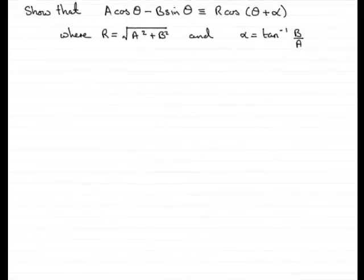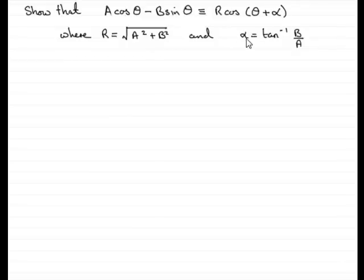Welcome to this tutorial on proving the identity that a·cosθ − b·sinθ, where a and b are constants, is identical to r·cos(θ + α), where r equals the square root of a² + b² and α equals the inverse tan of b over a. We'll start with the right-hand side and show that it's identical to a·cosθ − b·sinθ.